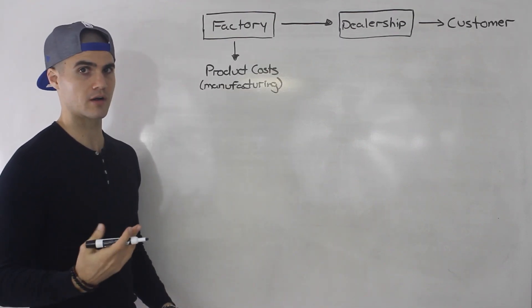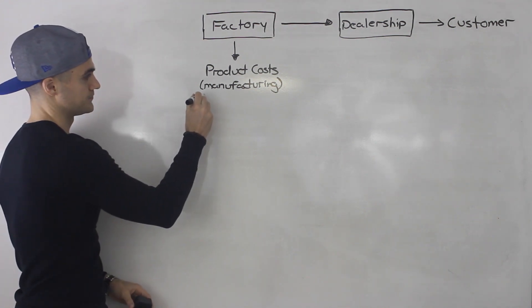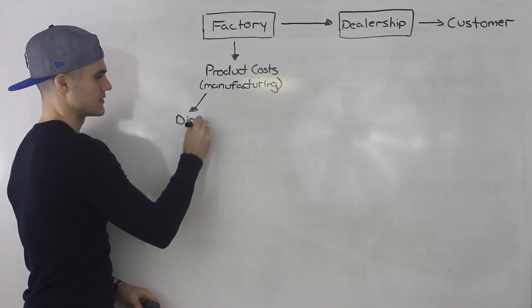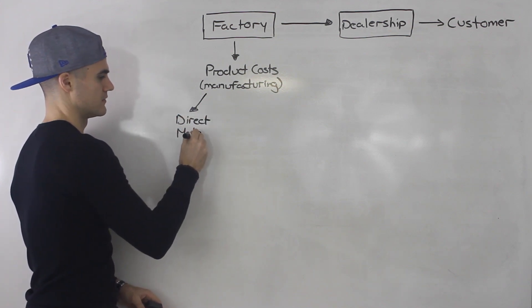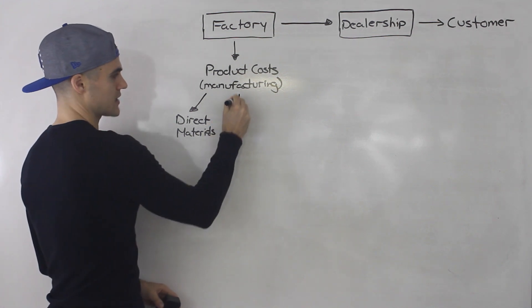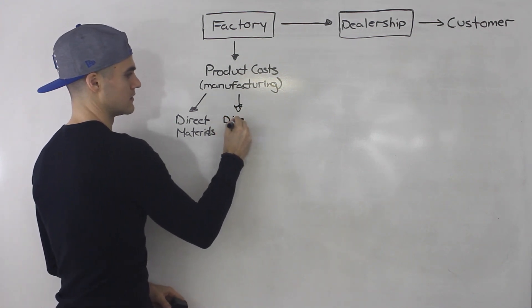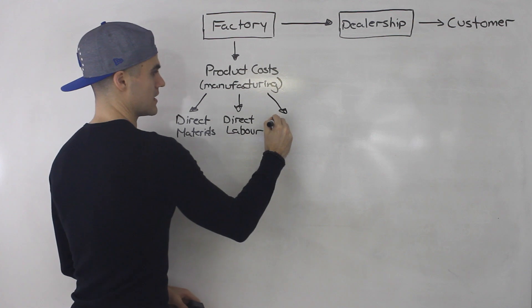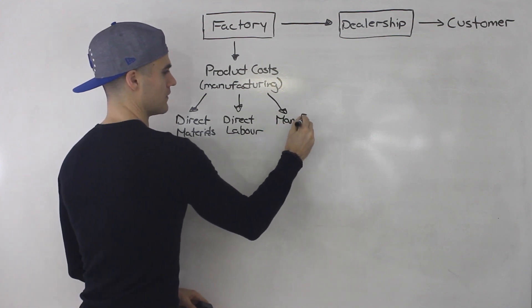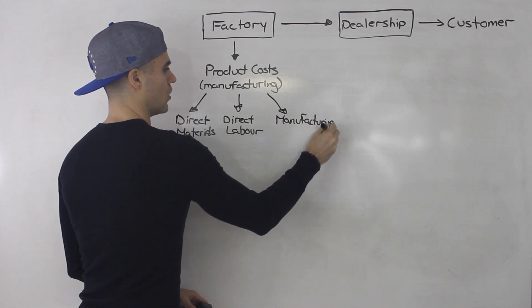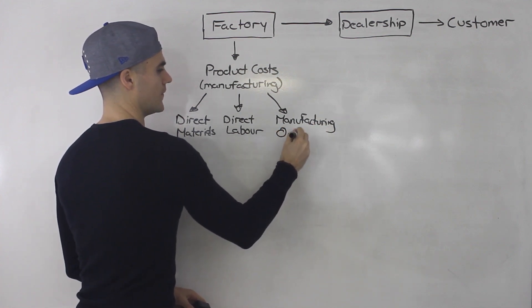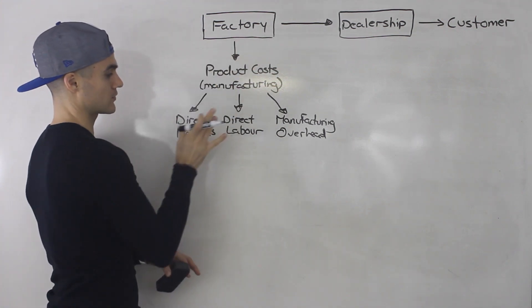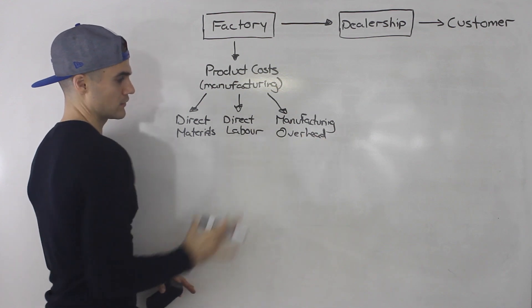There are actually three different types of product costs you're going to see come up in this course. The first type is something called direct materials. Another type is called direct labor. And then the last type is manufacturing overhead. Those are the three types of product costs incurred in the factory: direct materials, direct labor, and manufacturing overhead.